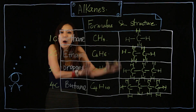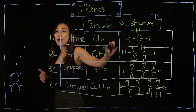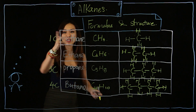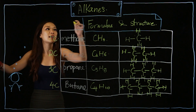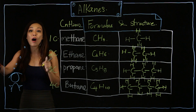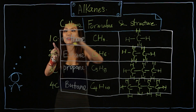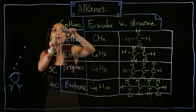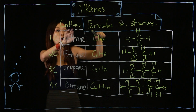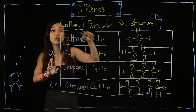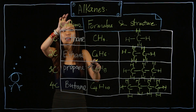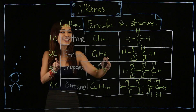Now, the general formula here — if you do math, you can see a number pattern. The formula is CnH(2n+2), where n represents the number of carbon atoms. So if there is one carbon, n = 1: H = 2×1 + 2 = 4, giving CH4. If n = 2: H = 2×2 + 2 = 6, giving C2H6.